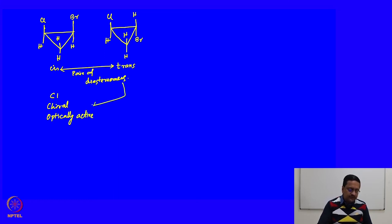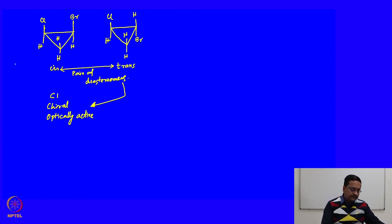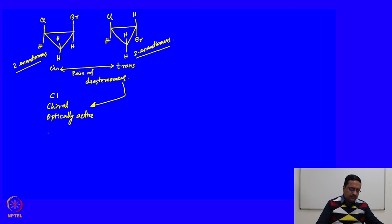The same is true for the trans molecule: the original compound with two methyl groups had a C₂ axis, but because the two groups are now different, that C₂ does not exist. Therefore, this molecule is also chiral and optically active. The cis isomer will have two enantiomers, the trans compound will also have two enantiomers, and hence this compound will have four optically active isomers in total.